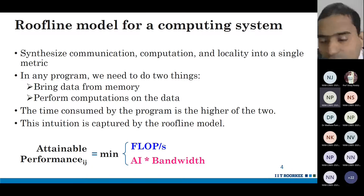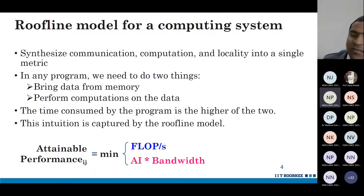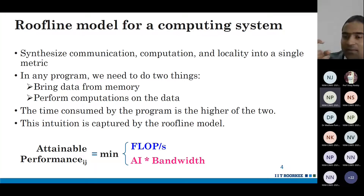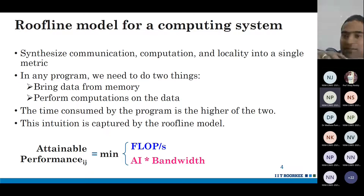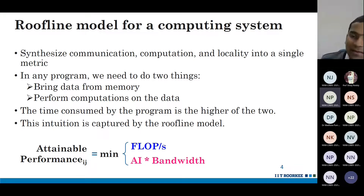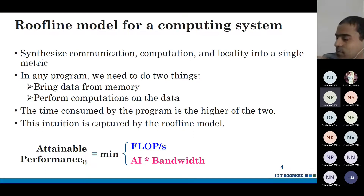Usually we use simulators like gem5 and on those simulators we run benchmark suites such as SPEC. When you run those benchmark suites on your simulator you get the performance estimate for that particular application only. The roofline model, on the other hand, tells you the peak — the maximum performance any benchmark or application can get on this computing system. Both are important and complementary.